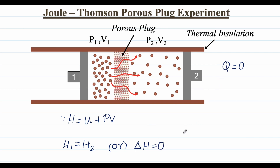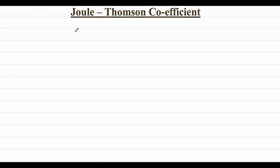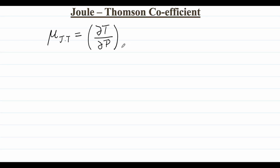The Joule-Thompson experiment is therefore isenthalpic and adiabatic. To quantify deviation from ideal behavior, the Joule-Thompson coefficient is used, denoted by μ with subscript JT. It is defined as the change of temperature with pressure at constant enthalpy, and practically it is measured from the temperature change as the gas undergoes a pressure drop through the porous plug.